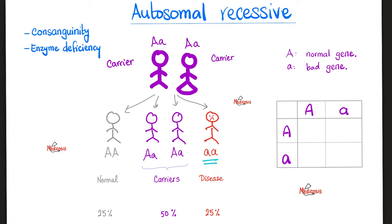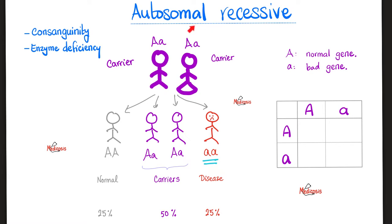Tyrosinemia is usually an autosomal recessive disease. When you hear the words autosomal recessive, two things need to pop into your head. Number one: consanguinity — people who marry their relatives in a tight-knit community. And number two: enzyme deficiencies are usually the culprit of the autosomal recessive disease. What are the enzymes that are deficient in tyrosinemia? We have a story.